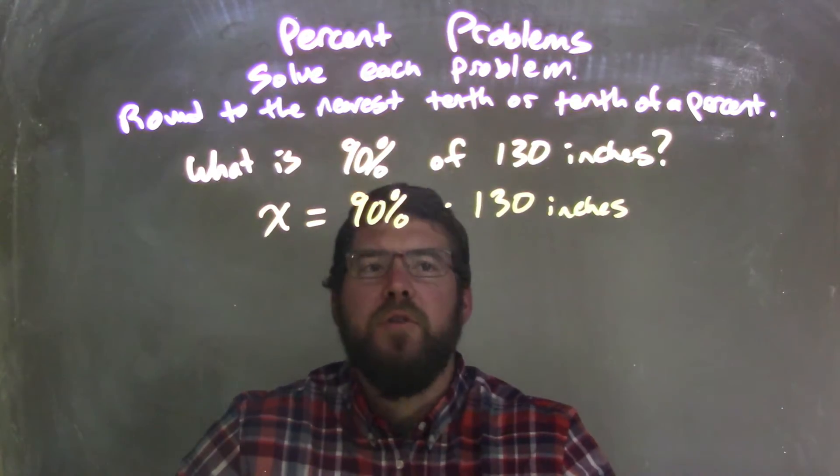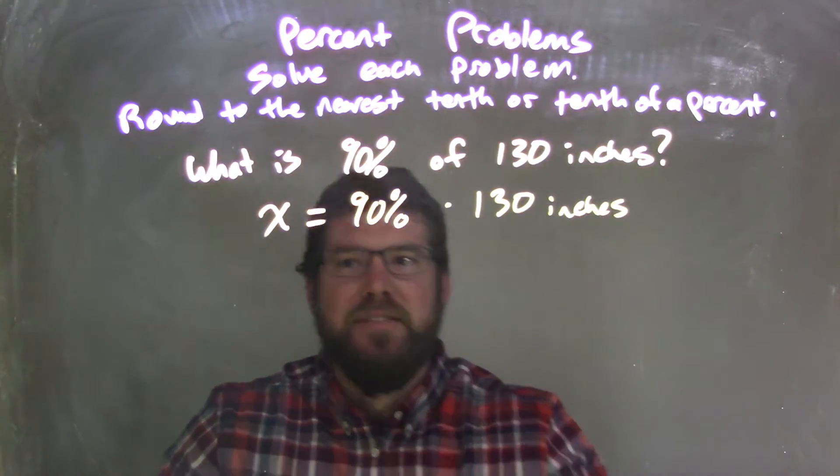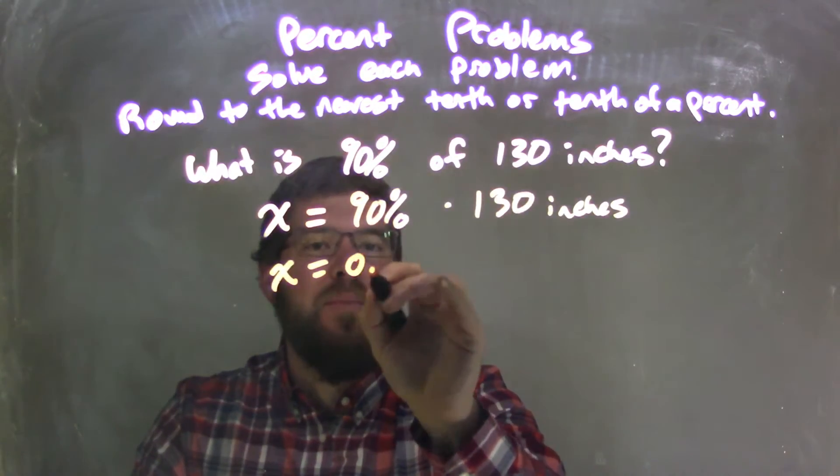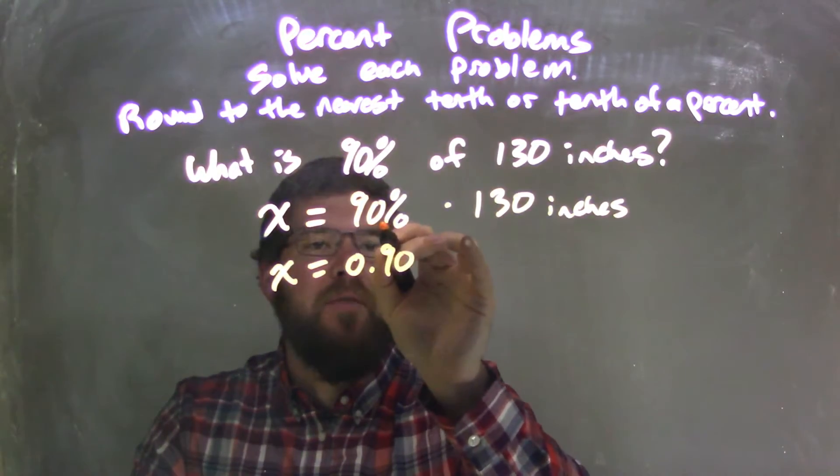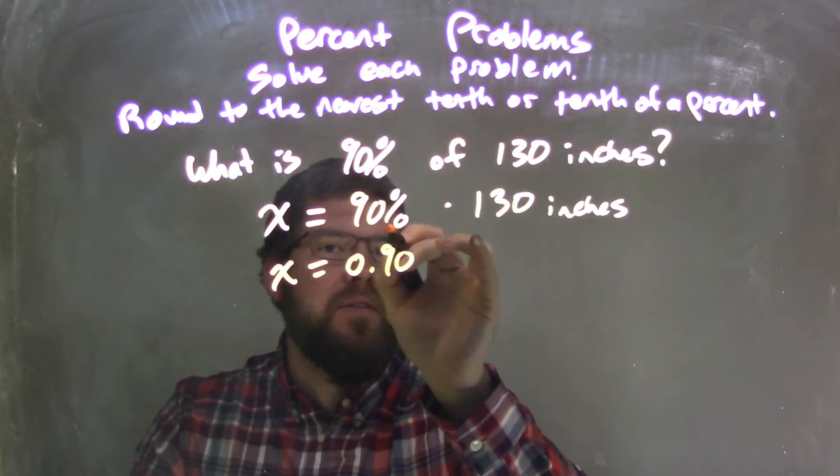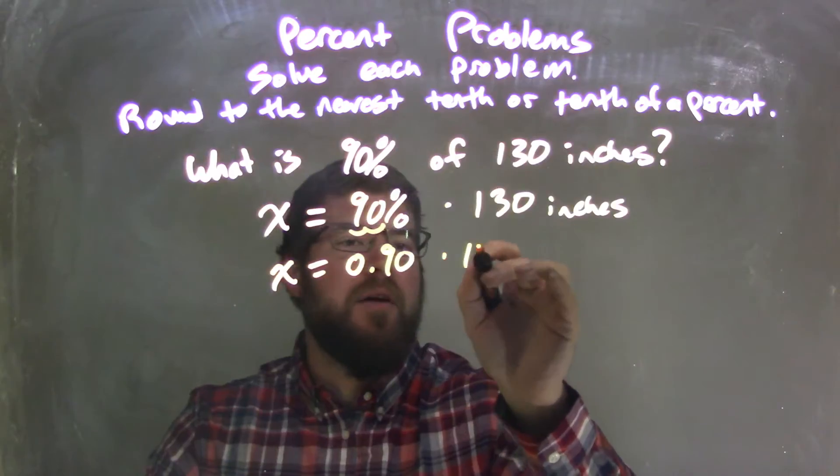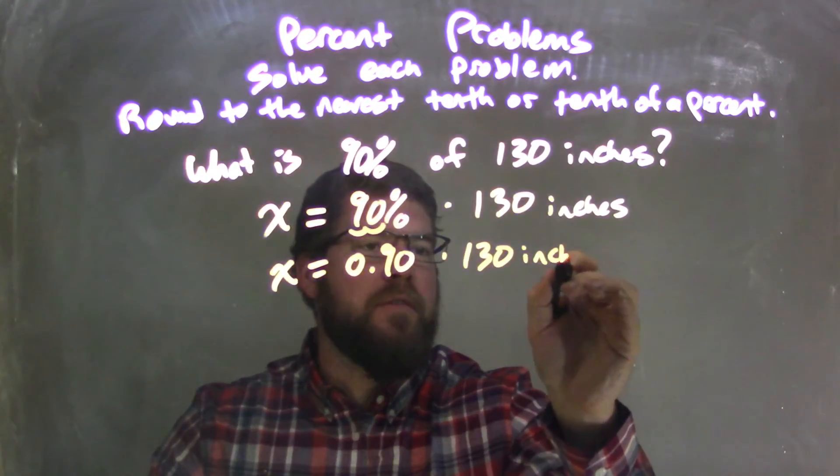Let's convert that 90% to a decimal. So X stays there, equals—90% as a decimal is 0.90. We move that decimal that's right there over two units to the left. So we have 0.90 times 130 inches. I'm going to leave my units there, it's okay.